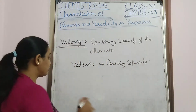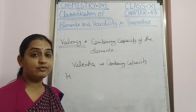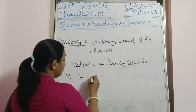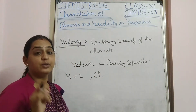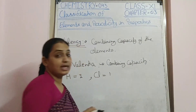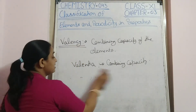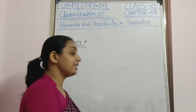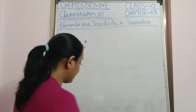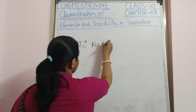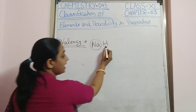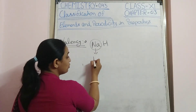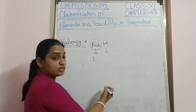For example, hydrogen has a combining capacity of one, so its valency is one. Chlorine also has one valency. For NaH, one sodium atom combines with one hydrogen atom, so the valency of sodium is one and the valency of hydrogen is also one.